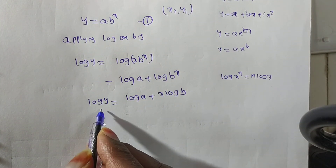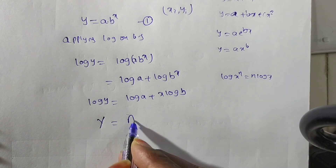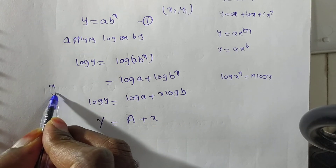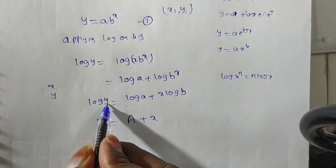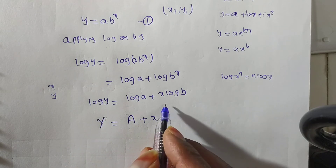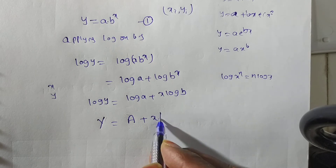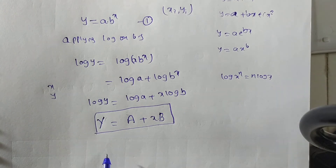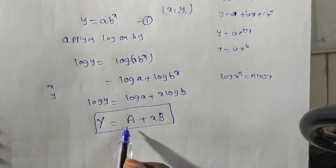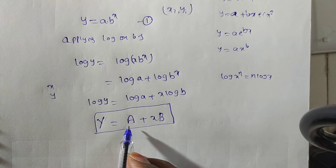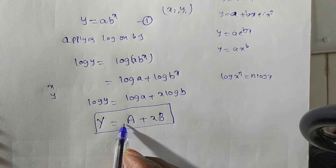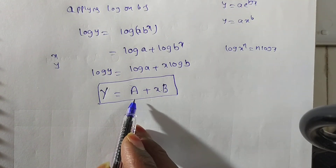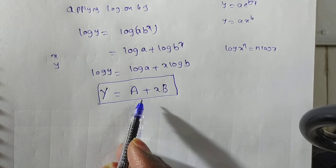Now it is an addition of terms. Let capital Y = log y, capital A = log a, and capital B = log b. The given x values remain small x. This gives Y = A + Bx, which is a straight line. You know the normal equations for a straight line very well.